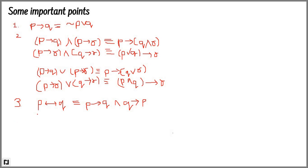If we are given P implies Q, we can also write it as P AND Q, or equivalently as (P AND Q) OR (negation of P AND negation of Q).